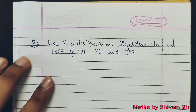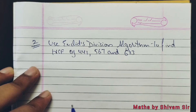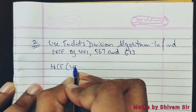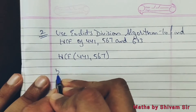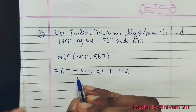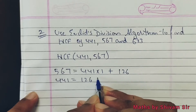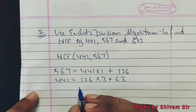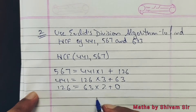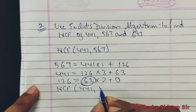This is the second question: if we have three numbers and we have to use Euclid's division algorithm, we take pairing of two numbers. Take 567 and 441 first. 567 is equal to 441 multiply by 1 plus remainder 126. Then 441 is equal to 126 multiply by 3 plus remainder 63. Then 126 is equal to 63 multiply by 2 plus remainder 0.